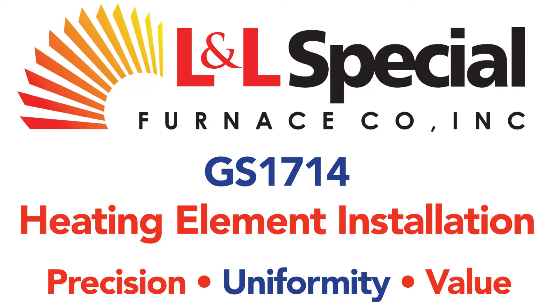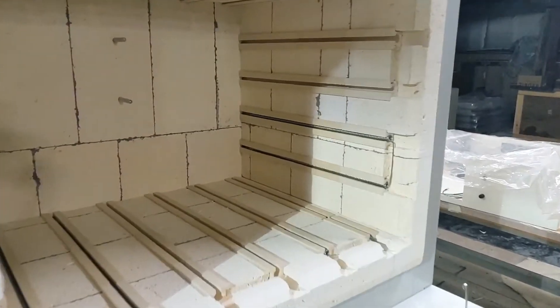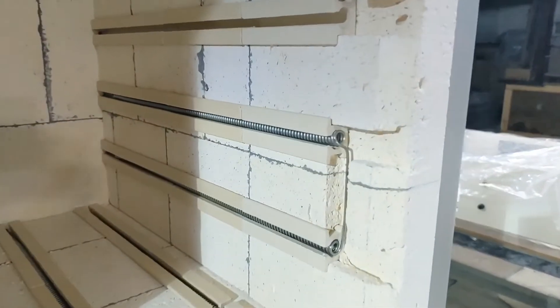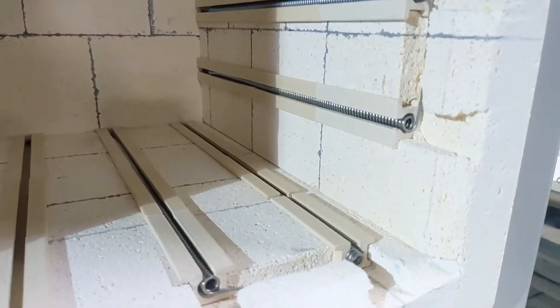In this video we will be showing how to install heating elements into an L&L special furnace model GS1714 benchtop furnace. We will start by showing what a side element and bottom element look like when they are properly installed.